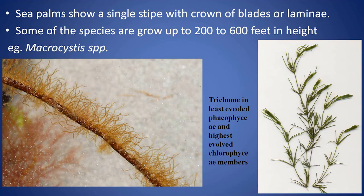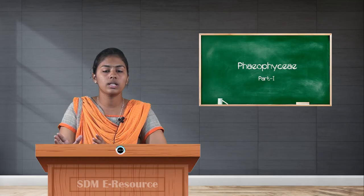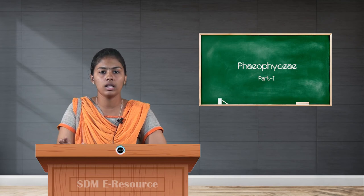These Phaeophyceae members are very large in nature and can grow up to several feet in height. Some species like Macrocystis can grow up to 200 to 600 feet in height, which explains why they are found in marine regions.